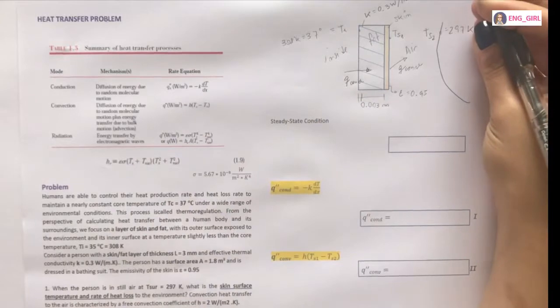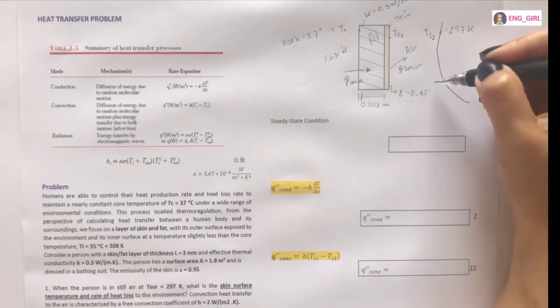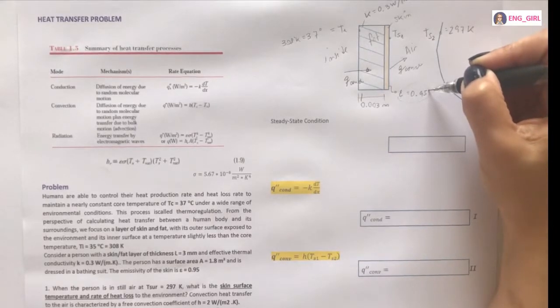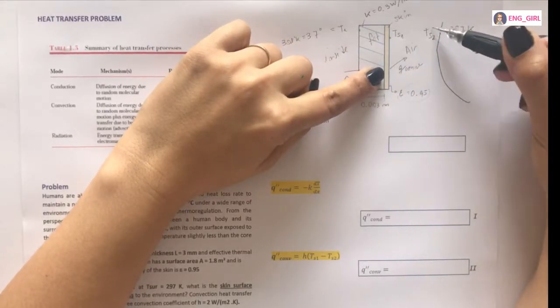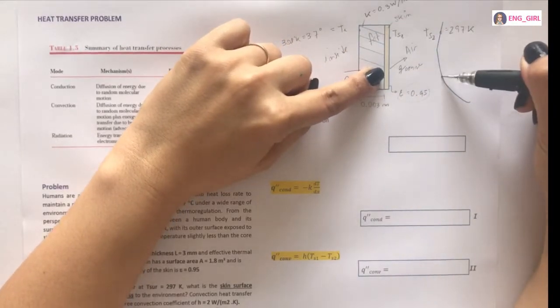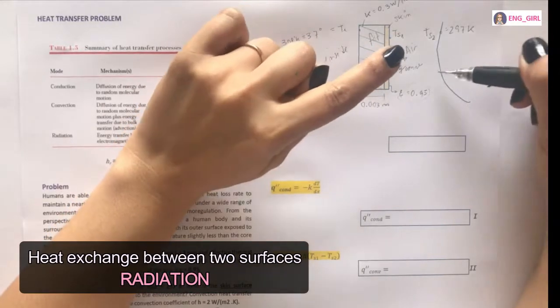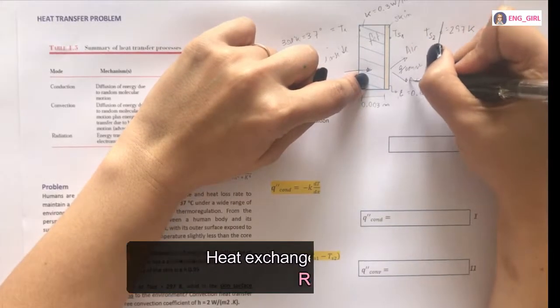Okay. If you see, here we have the emissivity. I think we have radiation. Let's confirm that. Here we have one surface and here another surface. So, heat transfer exchange between two surfaces is radiation.